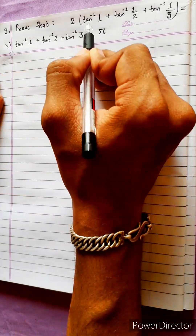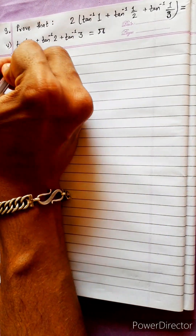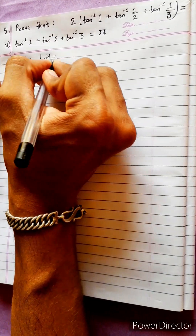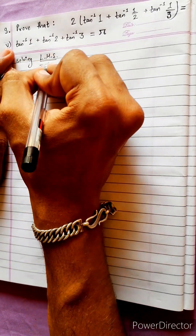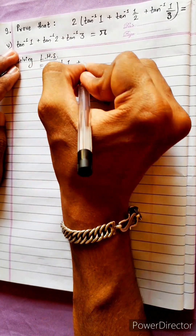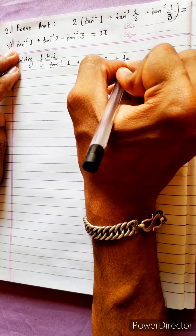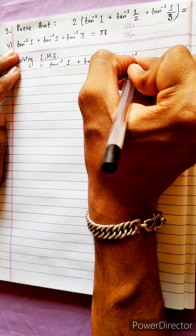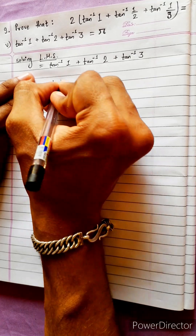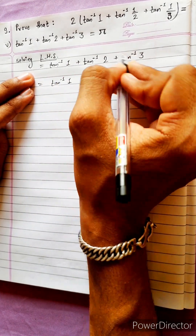We have to prove both the left hand side and right hand side equal to pi. Solving the left hand side: LHS is tan⁻¹(1) + tan⁻¹(2) + tan⁻¹(3). Now let's use the formula tan⁻¹(a) + tan⁻¹(b).